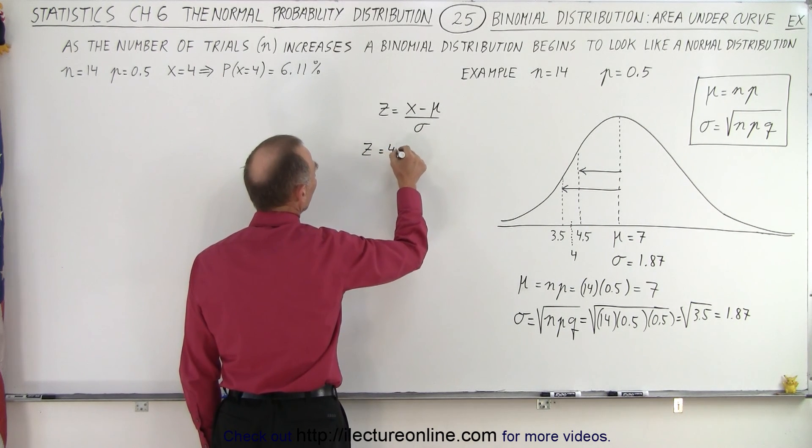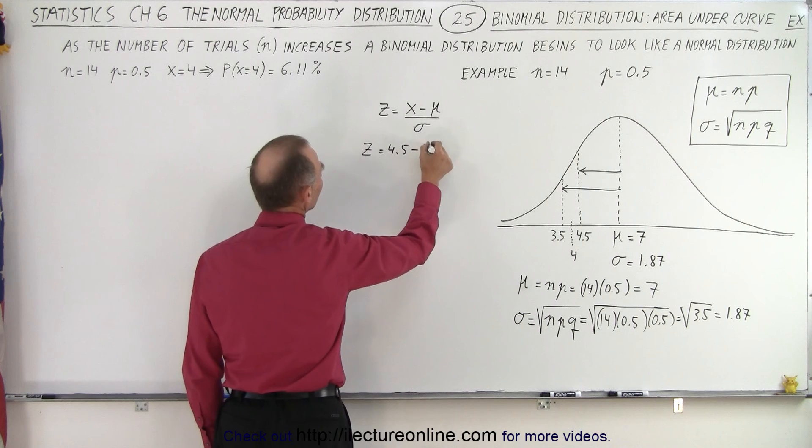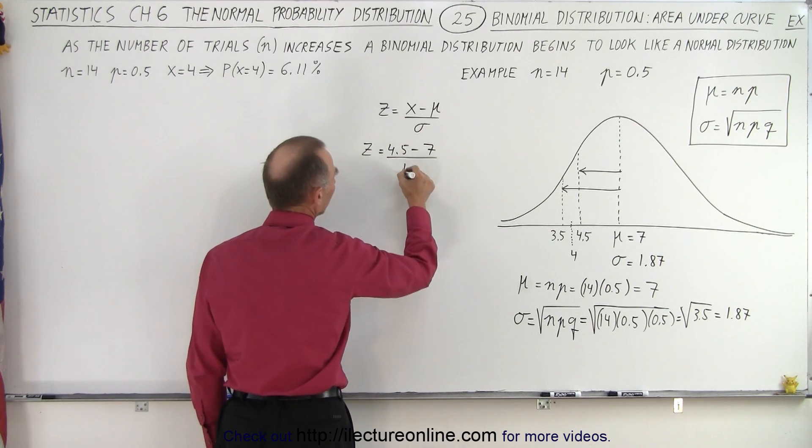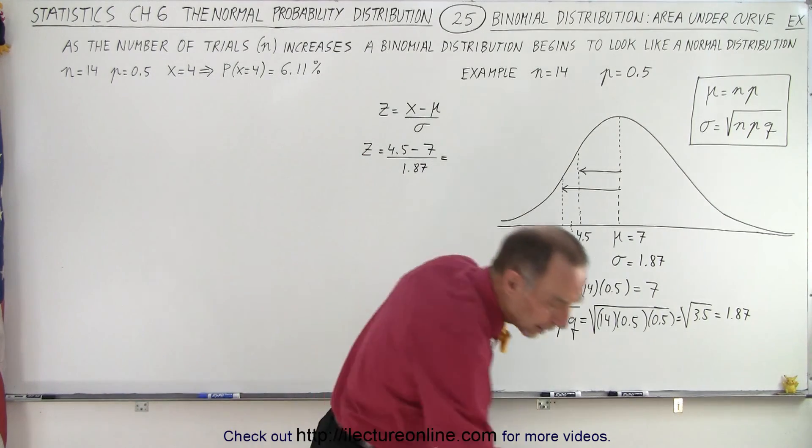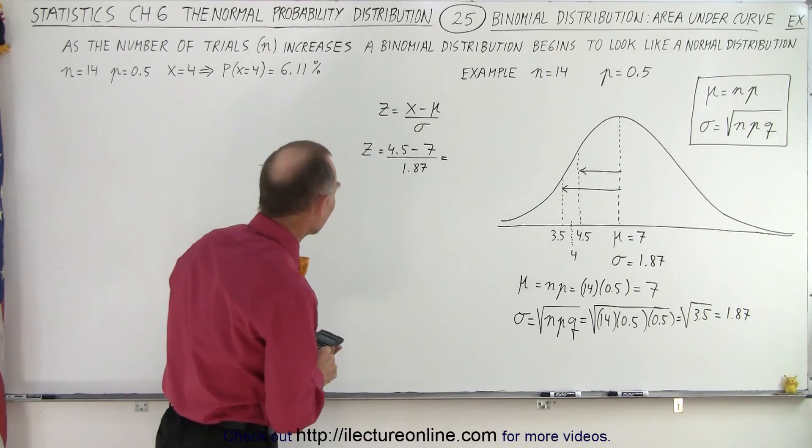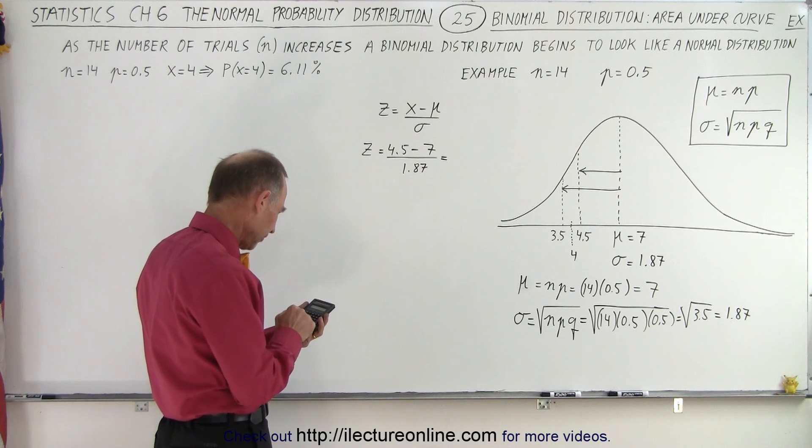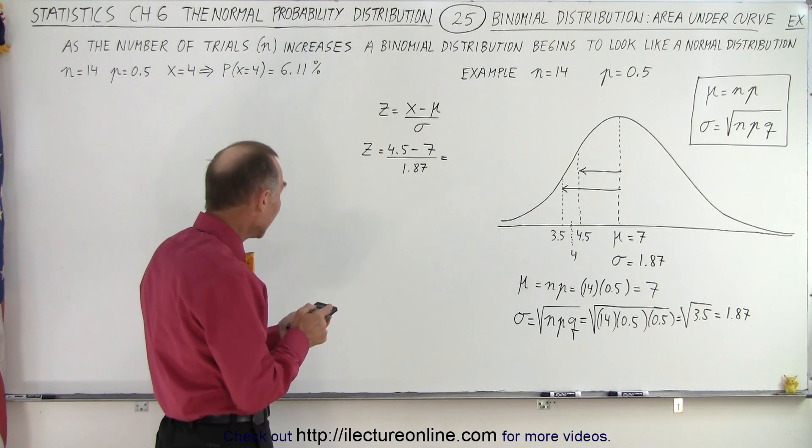So z is equal to 4.5 minus 7 divided by 1.87. Now we're going to get a negative number but for the table it doesn't matter, negative and positive will give you the same values. So 4.5 minus 7 and divide by 1.87, so that would be negative 1.337.